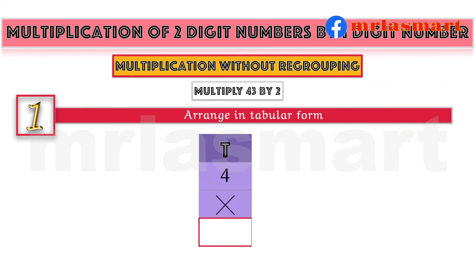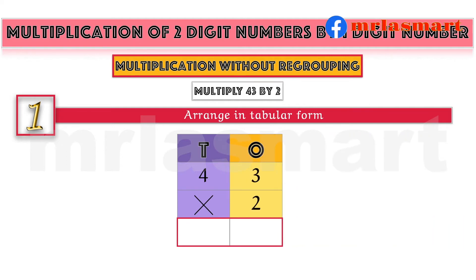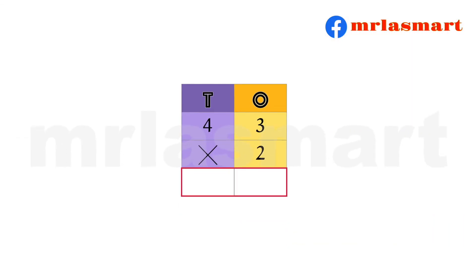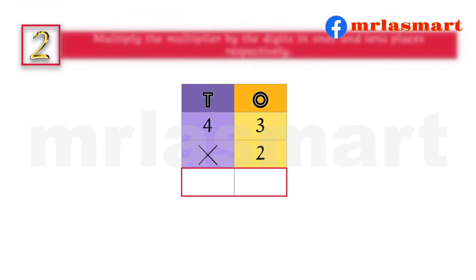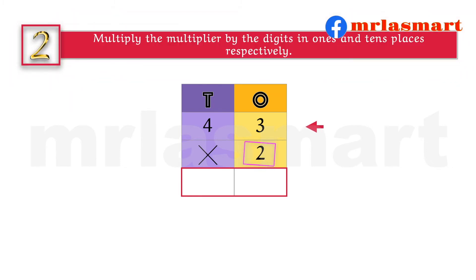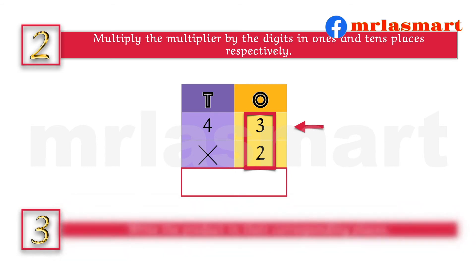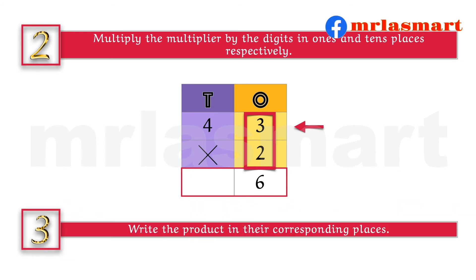Arrange in tabular form. Multiply the multiplier by the digits in ones and tens places respectively. Write the product in the corresponding places.